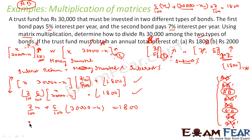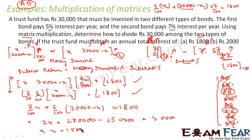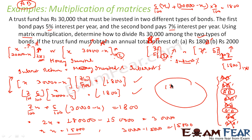Solving this equation: 7x/100 + 5(30,000 minus x)/100 = 1,800. Multiplying through by 100 gives 7x + 150,000 minus 5x = 180,000, so 2x = 30,000, which gives x = 15,000. Therefore the other part is 30,000 minus 15,000 = 15,000 as well. So you divide the money as 15,000 for the 7% bond and 15,000 for the 5% bond, and the total interest is 1,800 rupees.